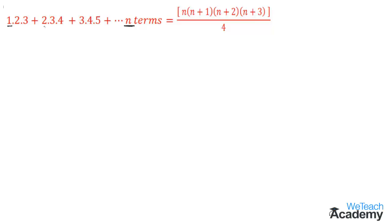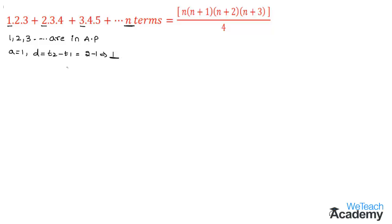Let us consider the first factors in the series. We have 1, 2, 3 in arithmetic progression, so a = 1 and the common difference d = t2 − t1 = 2 − 1 = 1. The nth term is tn = a + (n−1)d = 1 + (n−1)×1 = 1 + n − 1 = n.